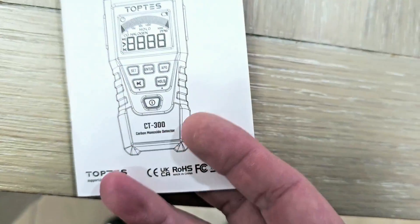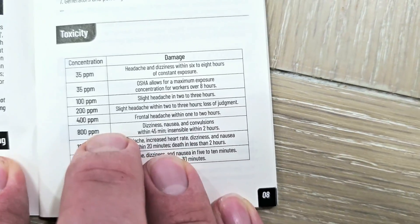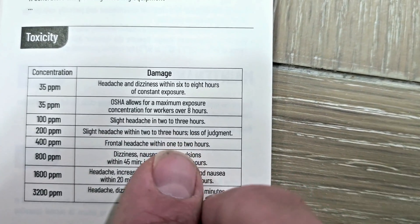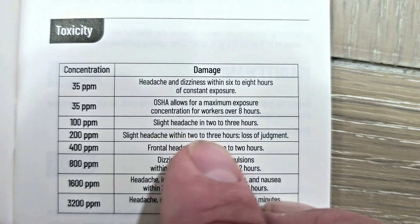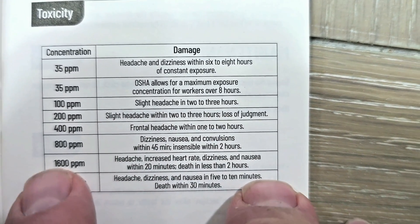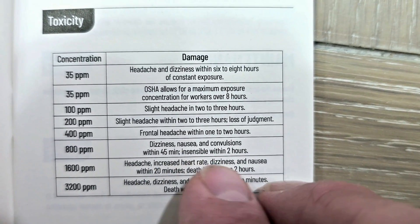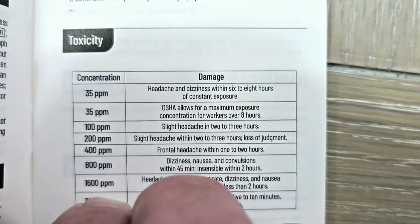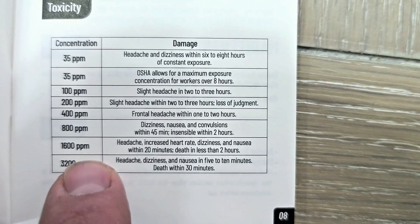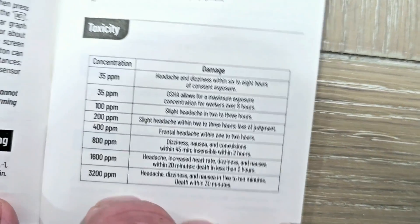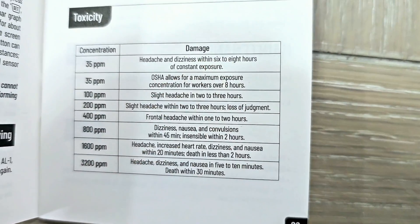Inside the user manual that TopTest provides when you buy this carbon monoxide detector, they have a little chart showing different concentration levels and what to expect. It says 100 ppm — slight headache in two to three hours. And 800 ppm — dizziness, nausea, convulsions within 45 minutes, insensible within two hours. Wow, so you can see it's no joke. This unit measures ppm — that's parts per million. Take a moment, pause the video, and you can read over this if you'd like.